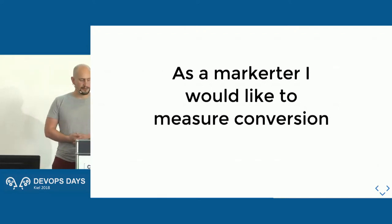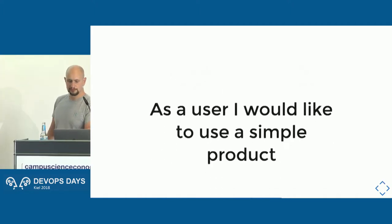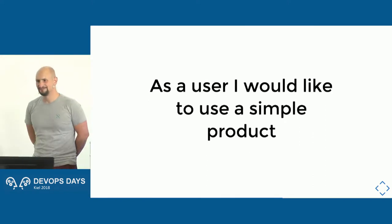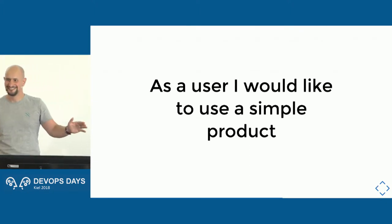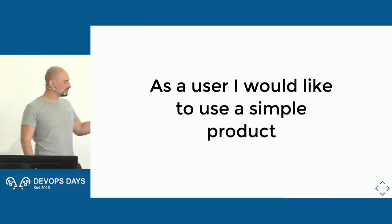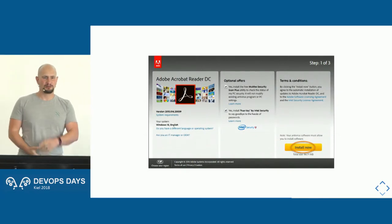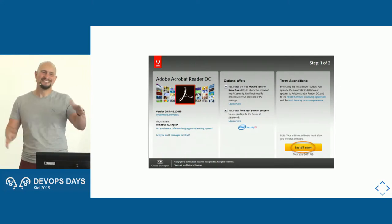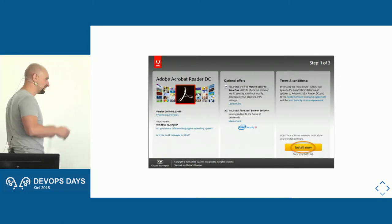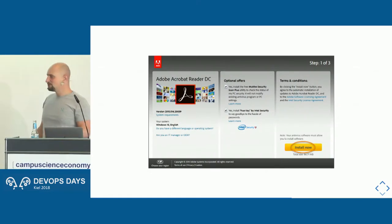And then we have what I think is the most important user story that no one ever writes: as a user, I would like to use a simple product. This is a feature that says 'no more features.' Remember that PDF reader that does everything including making coffee, but the one thing you wanted — reading a PDF — it doesn't do so well? Everything else: amazing. I just want a simple product. I have a job I want done, that's it.